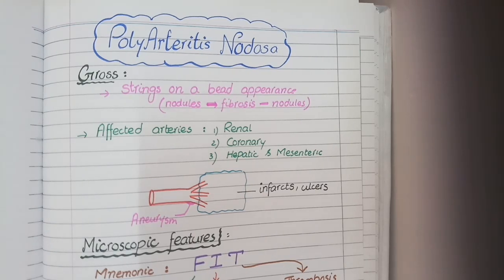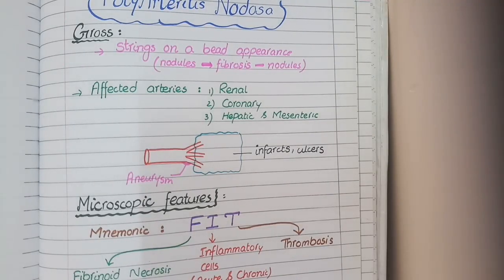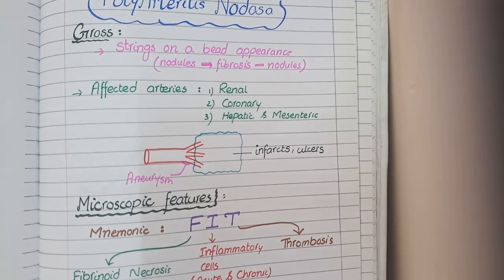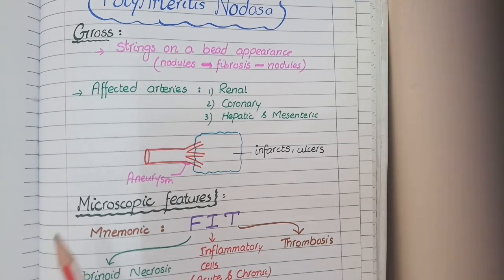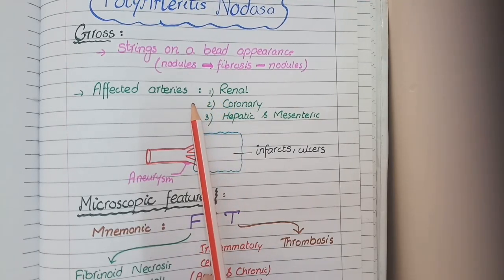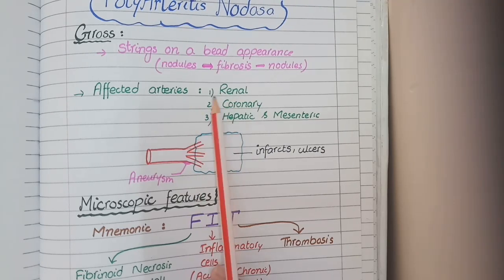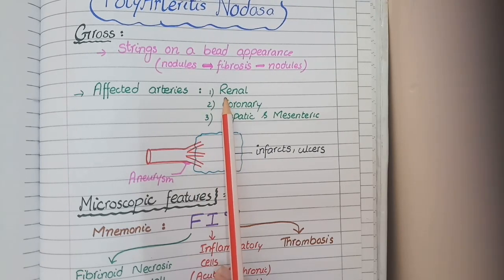To memorize the order of arterial involvement, here is a mnemonic poem: 'In PAN, there is a hypertensive young man, who suffers from ischemic heart disease, and cannot pass his stools with ease.' PAN stands for polyarteritis nodosa. The second line — 'there is a hypertensive young man' — means that renal arteries are the first to be involved, causing secondary hypertension in young adults.